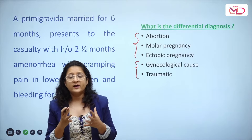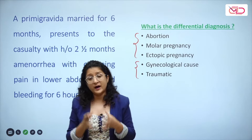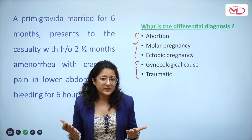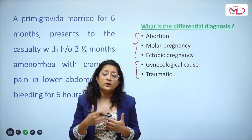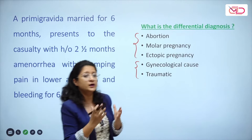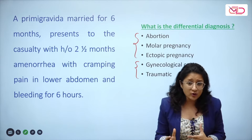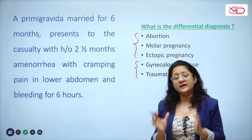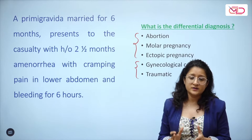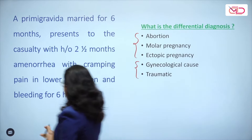Whenever a woman of reproductive age presents with vaginal bleeding, the first thing that should come to mind is: could this be a pregnancy-related complication? You want to know whether bleeding followed a period of amenorrhea. Even if not, any reproductive-age woman with vaginal bleeding — start by ruling out pregnancy-associated causes. Check for pregnancy first.